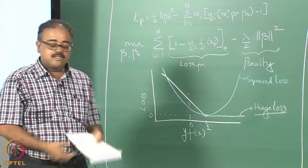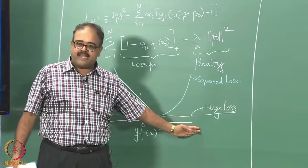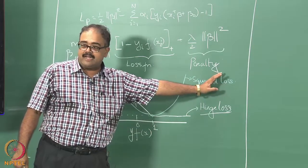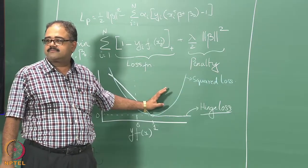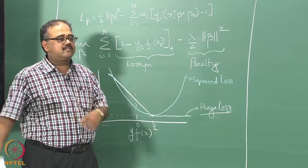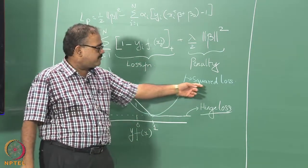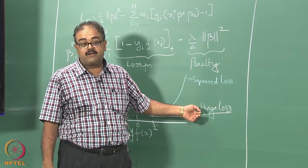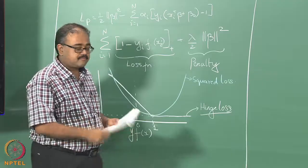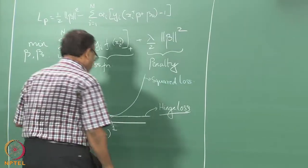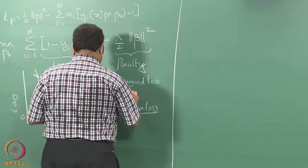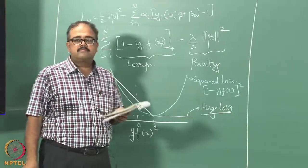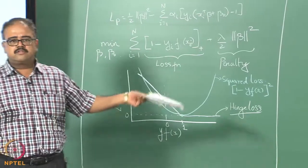The squared loss is a bit weird for classification. If you are on the correct side of the hyperplane but far away, you still contribute to the squared loss — whether you are on the right side or the wrong side, you still contribute. That is why the squared error function is not the ideal thing to minimize for classification. The hinge loss more often than not gives you a much better solution.